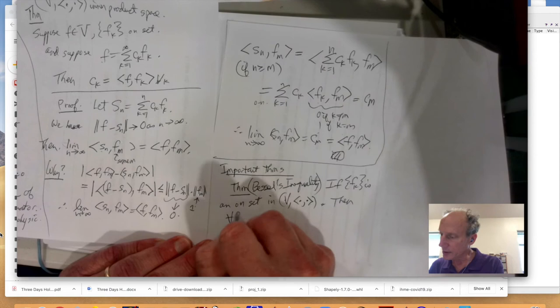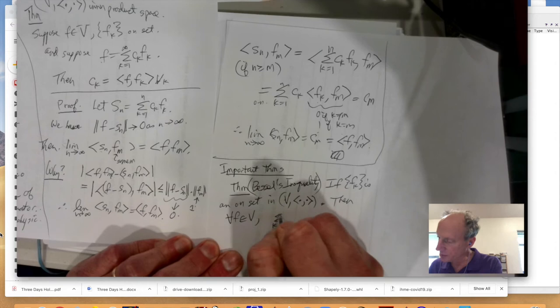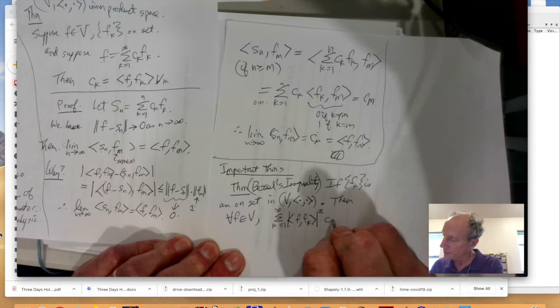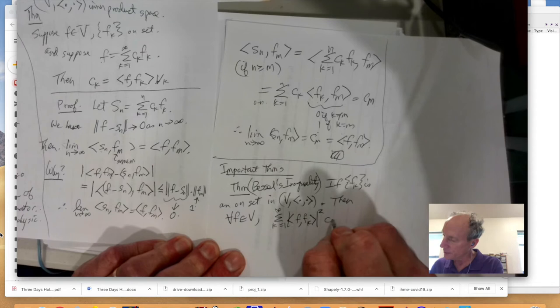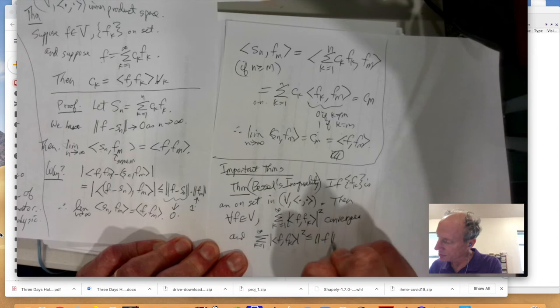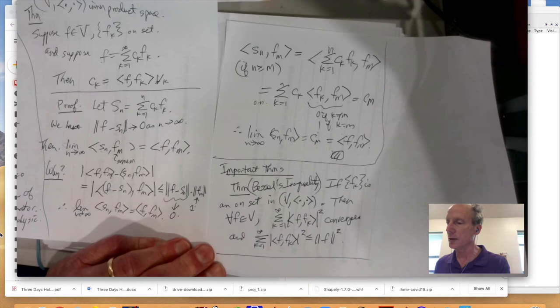All right. So, let's suppose we have that. Then, for all F in V, summation from K equals 1 to infinity of absolute value of the inner product of F with FK, norm squared, or absolute value squared, converges. Not obvious. And, if you add that all up, that's less than or equal to the inner product norm of F squared of F itself. Wow.